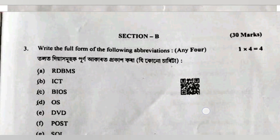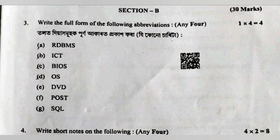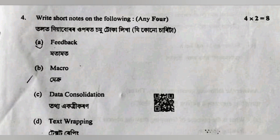Question number three: write the full form of the following. RDBMS — Relational Database Management System. ICT — Information Communication Technology. BIOS — Basic Input Output System. OS — Operating System. DVD — Digital Versatile Disc. SQL — Structured Query Language. POST — Power On Self Test.